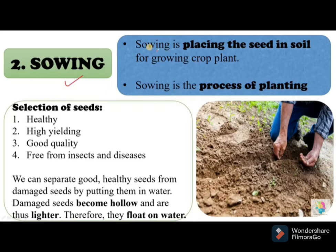Before sowing, some conditions must be met. One very important task is the selection of seeds. Seeds should be healthy, of high yielding variety, of good quality, and free from insects and diseases. These are the important criteria for selection of seeds.